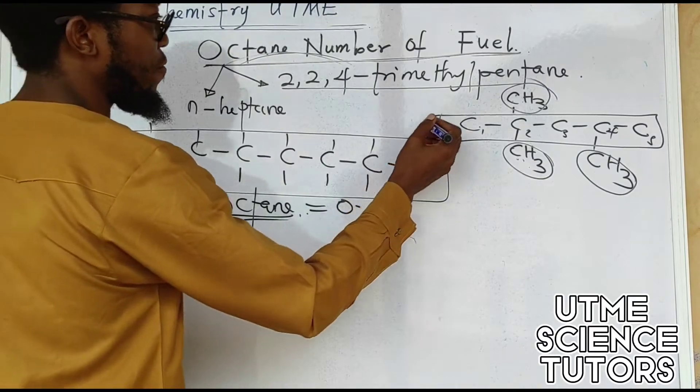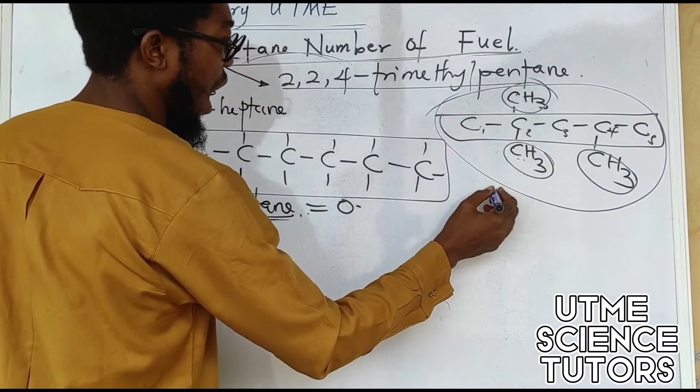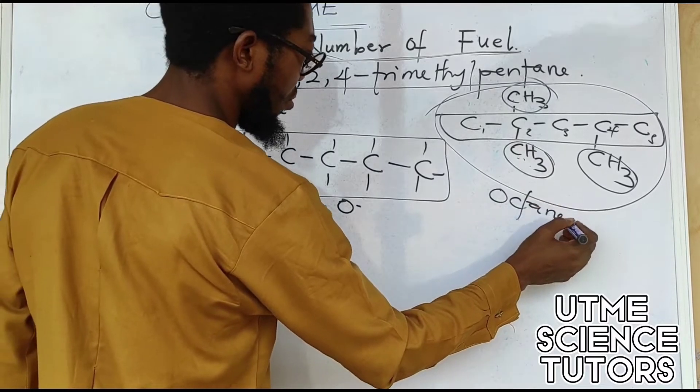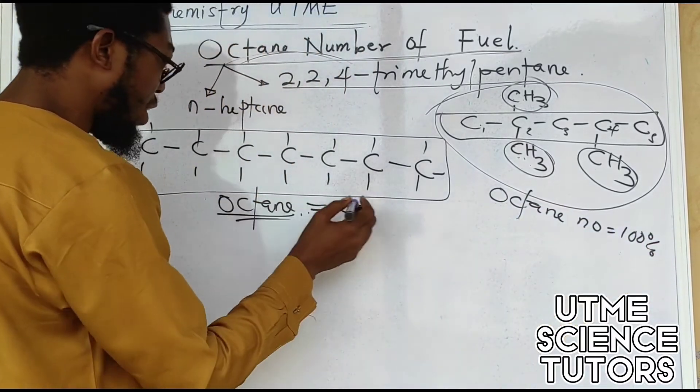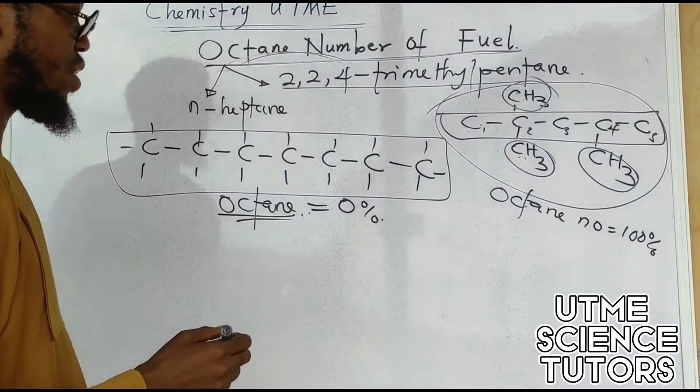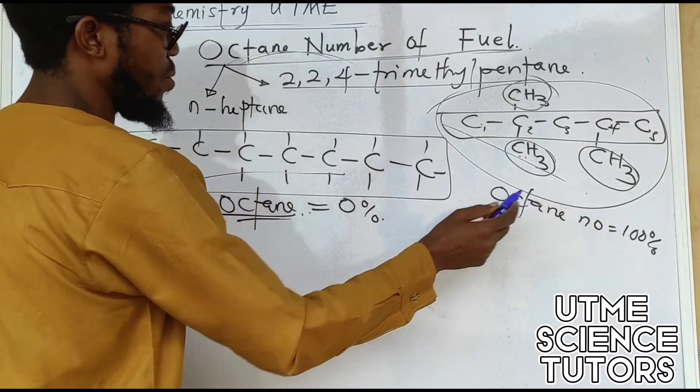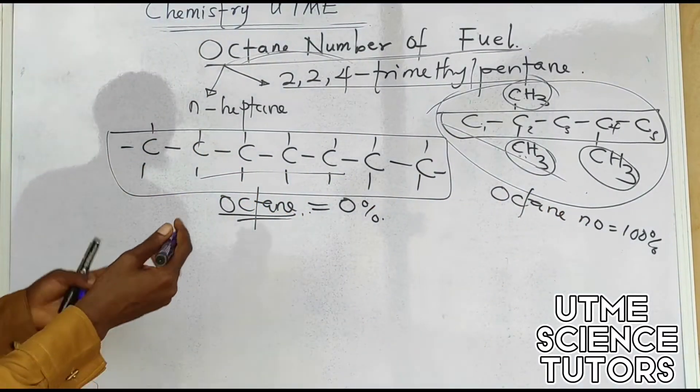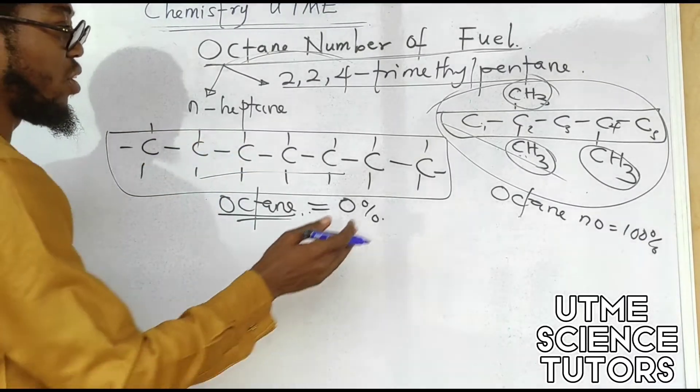So if a fuel that contains all its components to be this is having octane number to be equals to 100%. So while the one that contains n-heptane is having octane number of zero, a bad fuel, a very good fuel, extremely good fuel. Most times we cannot have n-heptane alone in our fuel, and we cannot have 2,2,4-trimethylpentane alone in our fuel. We have a mixture.